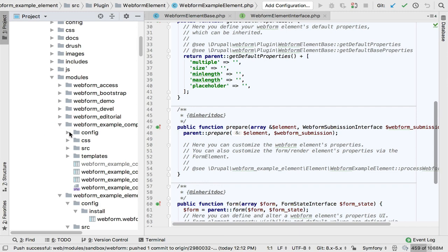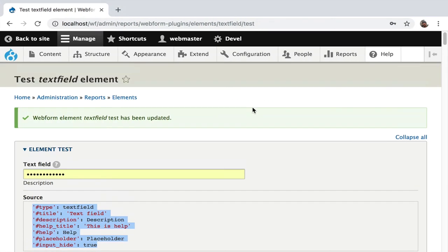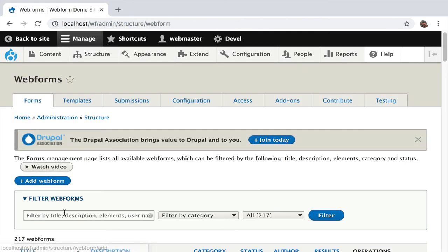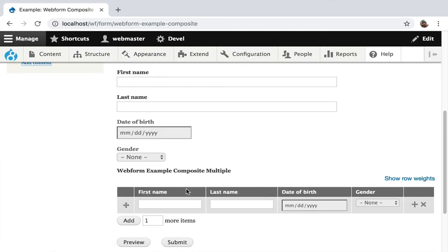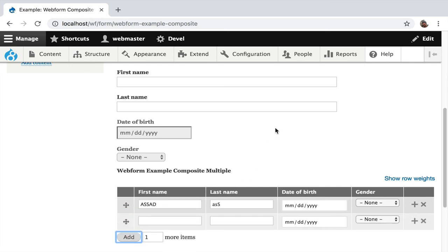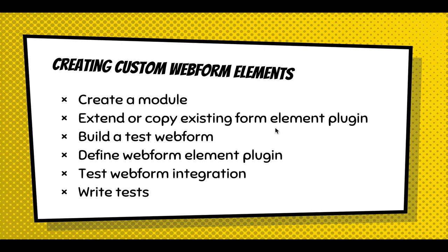There's also an example of a composite element — a bunch of fields working together: first name, last name, birthday — and it even supports a little conditional logic to help you understand how to set that up. For creating custom webform elements: definitely create a module; extend and copy an existing form plugin or copy that example module; build a test webform that calls that form element; once it's working, define a webform element to get it fully integrated into the webform module; test that integration; and finally write some automated tests to make sure things work as expected.